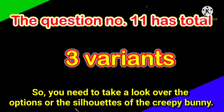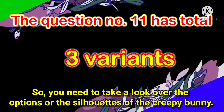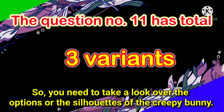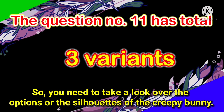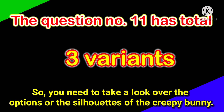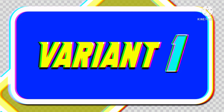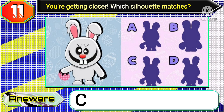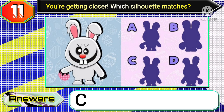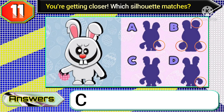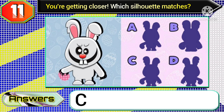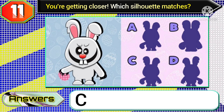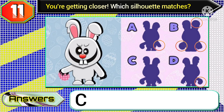Question number 11 has total three variants, so you need to take a look over the options or the silhouettes of the creepy bunny. In variant one, the correct answer will be option C silhouette, because I have marked all the faults with red circles — you can see here.